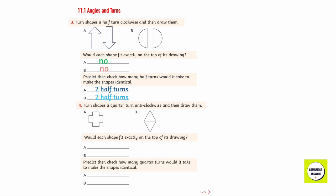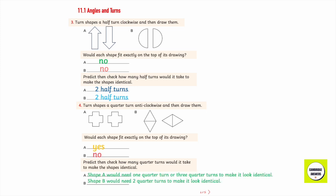Turn the shapes a quarter turn anti-clockwise and then draw them. Would they fit exactly on top of each other? A: yes. No. Predict, and then check. How many quarter turns would be needed to make the shapes look identical? Shape A would need one quarter turn or three quarter turns. Shape B would need two quarter turns to look identical.